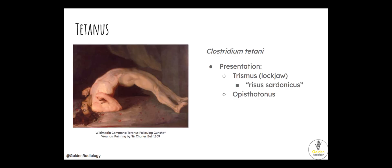Tetanus is caused by Clostridium tetani, and classically they'll tell you the patient stepped on a rusty nail. Note: if they say someone stepped on a nail through the sole of a wet shoe, think Pseudomonas, not tetanus. The presentation of tetanus includes trismus or lockjaw — spasms in the muscles of mastication — risus sardonicus, a teeth-bearing grin from facial muscle spasm, and opisthotonos, which consists of severe spasms with a severely curved back.